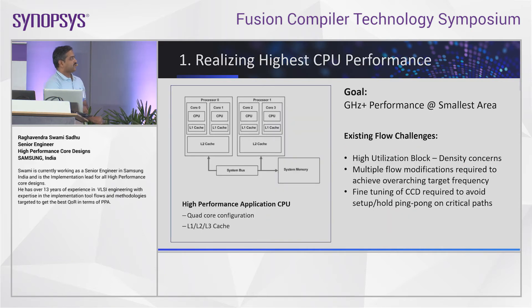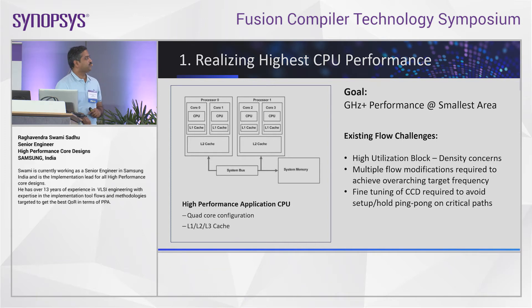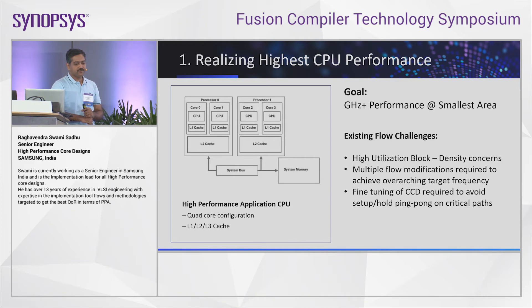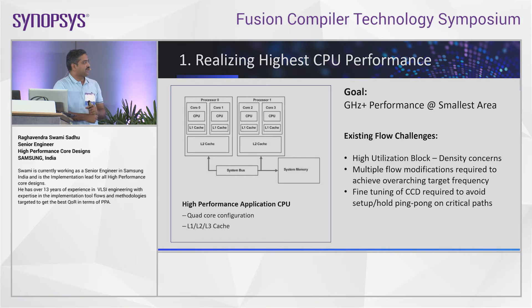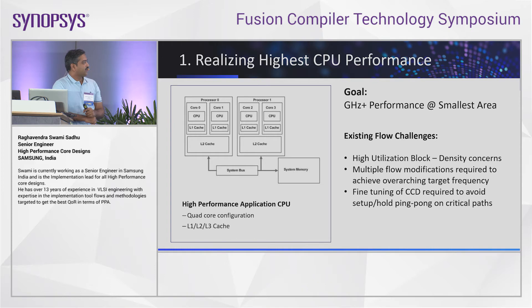Coming to the first design — the ARM CPU. The goal is high performance: meet the target frequency with the smallest area. The key challenges with existing flows include higher utilization blocks where we squeeze the area as much as possible, leading to density issues, IR drop problems, tough final closure with hold timing, unpredictable correlation between pre-route and post-route, and multiple flow modifications required to achieve the target frequency.